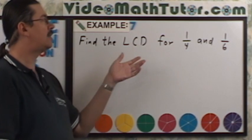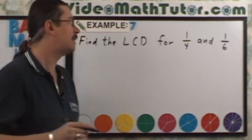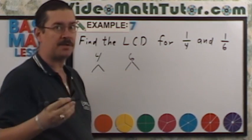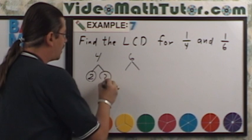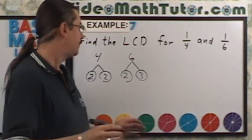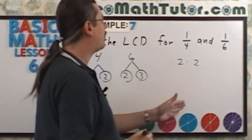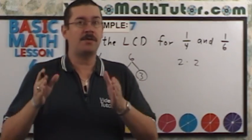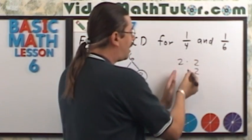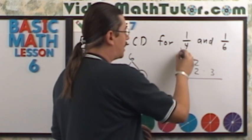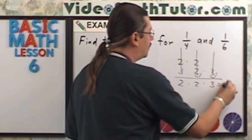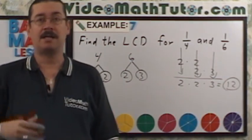Example 7 asks us to find the LCD for a quarter and one-sixth. First, let's write down the denominators: 4 and 6. I'm going to use factor trees to help. 4 can be factored as 2 times 2; 6 can be factored as 2 times 3. Using the column approach, I write down 2 times 2, then line up factors of 6 beneath — the 2 aligns with one of the 2s, and the 3 goes separately. So the answer is 2 times 2 times 3, which gives 12. That's the LCM, which is also the LCD.